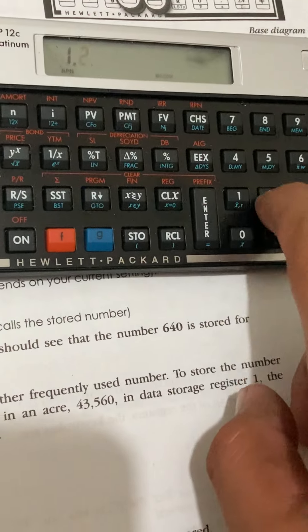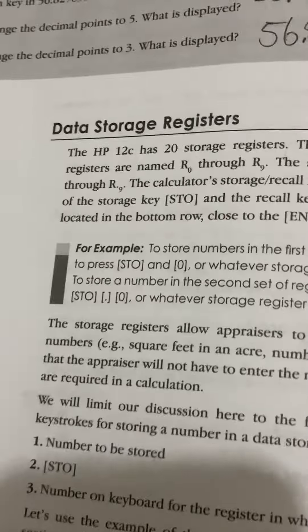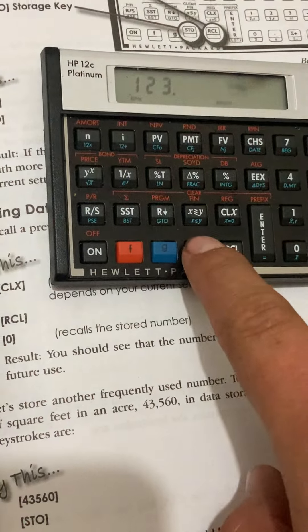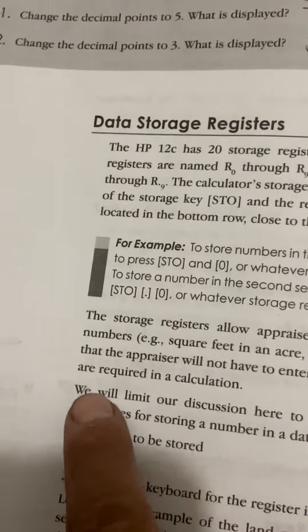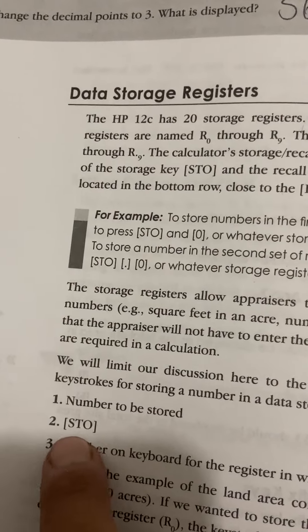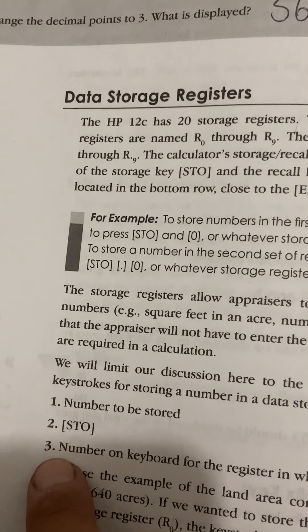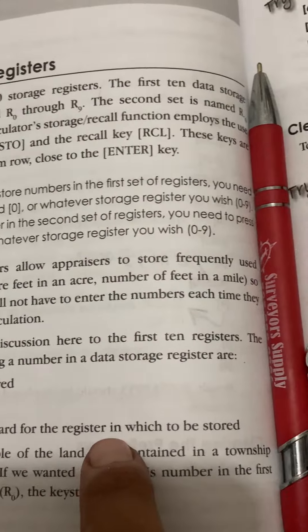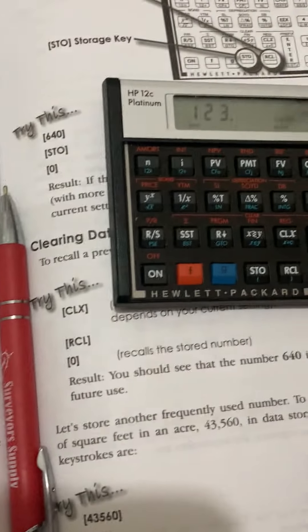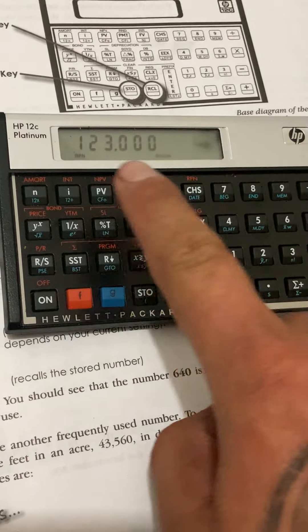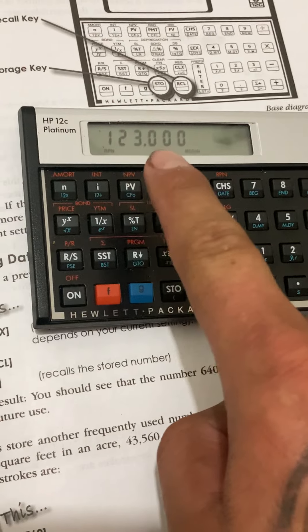The keystrokes for storing a number are: enter the number to be stored, then press STO, then press the register number on the keyboard in which it should be stored — for example, register seven. The display should show 123.000 after you do that.